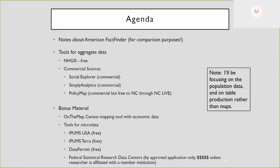These are the tools I'm going to cover: NHGIS, Social Explorer, Simply Analytics, and Policy Map. Most of these tools have multiple datasets in them. I'm going to focus on population data, and although all of the commercial sources have the ability to map data, I'm not going to address the mapping components — I'm only going to talk about the data.